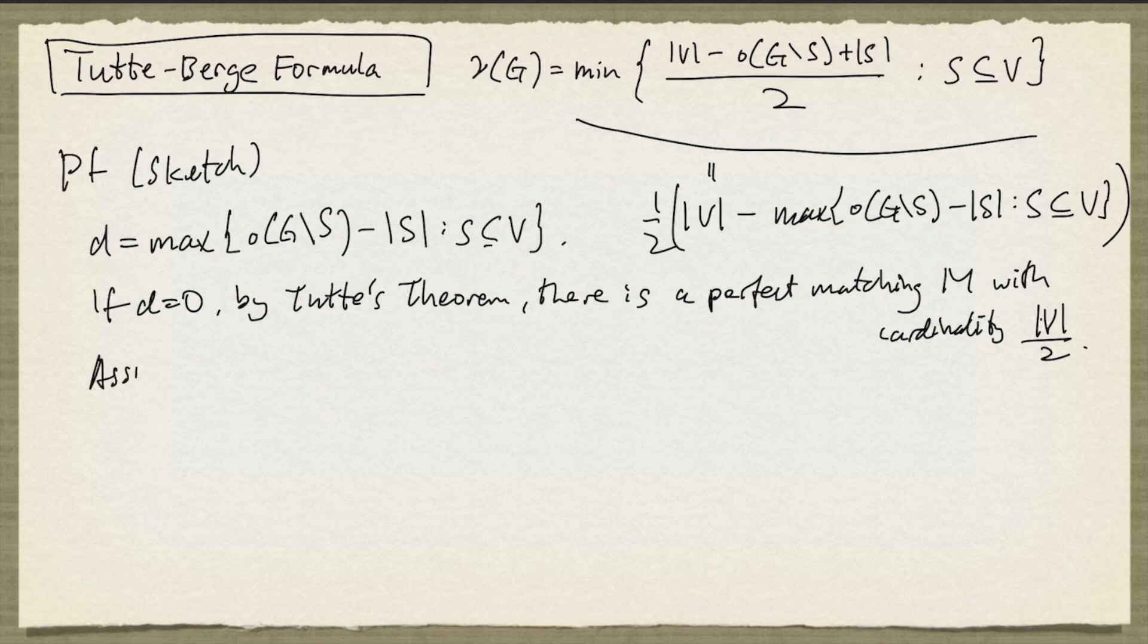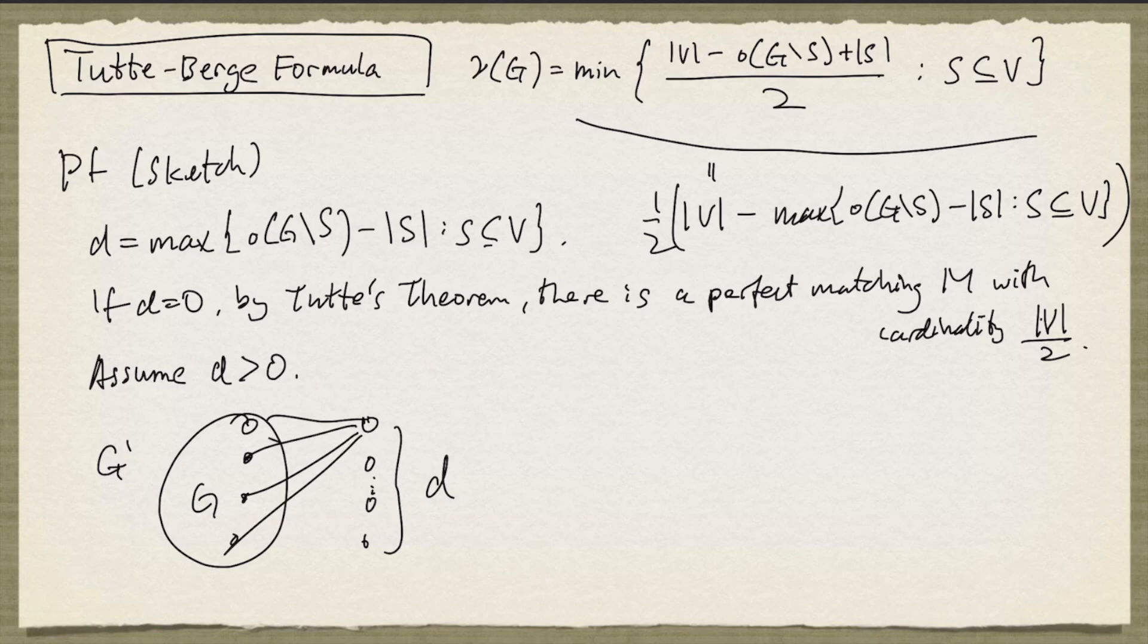So we assume that D is positive. And we're going to construct a new graph G'. Starting with G, with D additional nodes, each of which is joined to every node in G. And there's no edge joining two nodes in this set here.